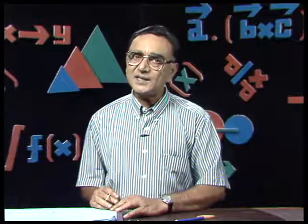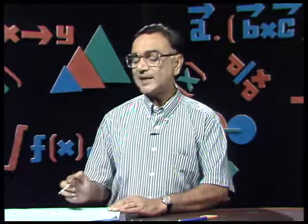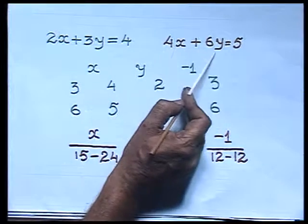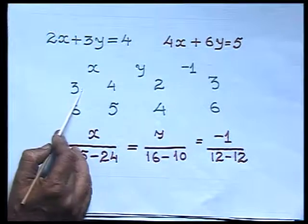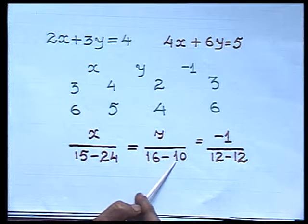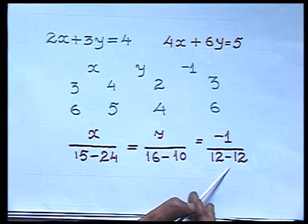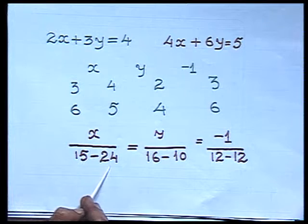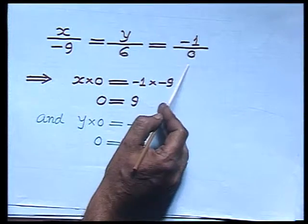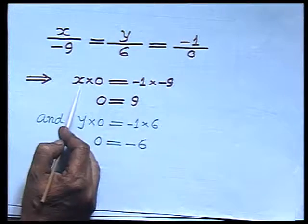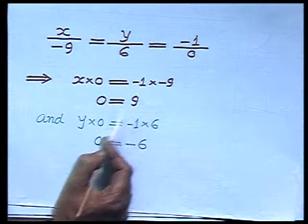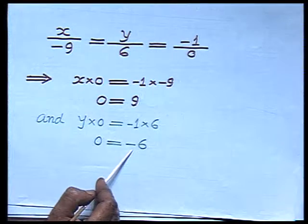Let us take another case: 2x plus 3y equals 4 and 4x plus 6y equals 5. Setting up the cross-multiplication: x upon (15 minus 24) equals y upon (16 minus 10) equals minus 1 upon (12 minus 12). That gives x upon minus 9 equals y upon 6 equals minus 1 upon 0. From x upon minus 9 equals minus 1 upon 0, I get 0 equals 9, which is impossible. Similarly y times 0 equals minus 6 is also not possible. So this system is an inconsistent system and has no solution.